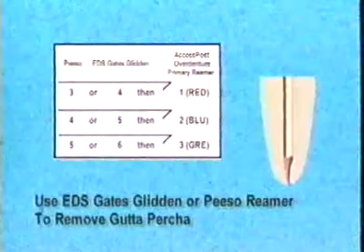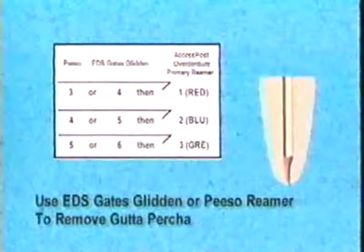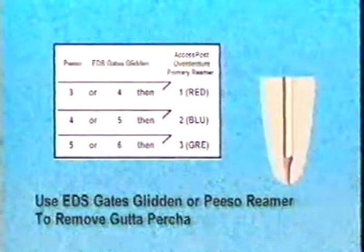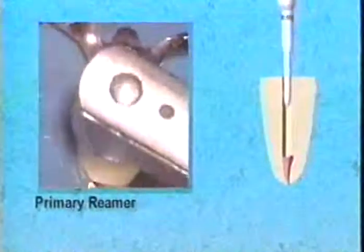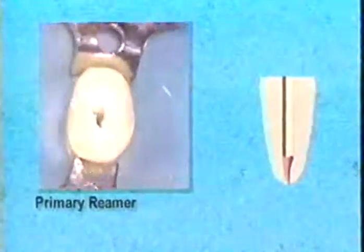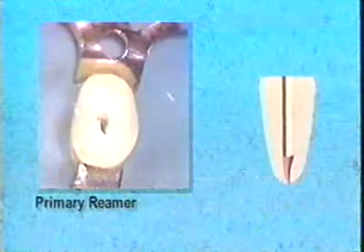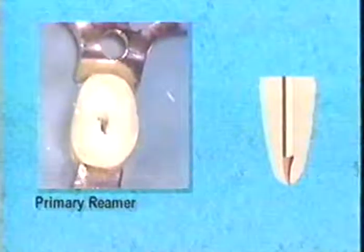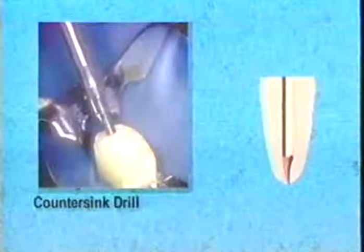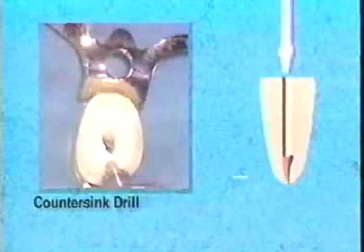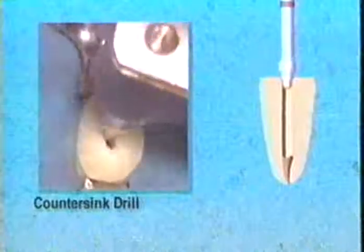All EDS Gates Glidden Drills are color-coded to match both reamer and post sizes. When 100% of the post hole depth and 90% of the width have been achieved with the Gates Glidden Drills, the primary reamer is inserted into the canal until the shoulder contacts the coronal dentin. It is best to limit the number of entries into the canal to once or twice and to always cut wet. The direct procedure countersink root facer drill is used next to create the spaces for the second tier and flange of the Access Post Overdenture.